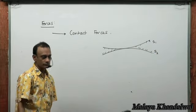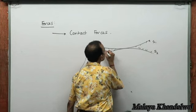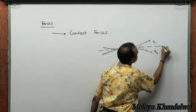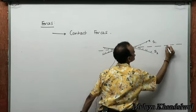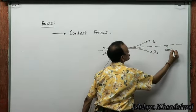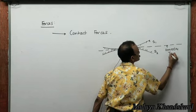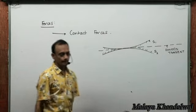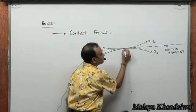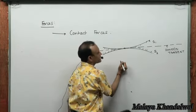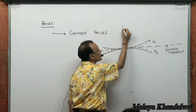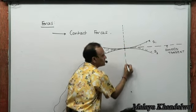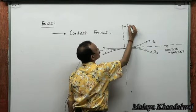At the region of contact, there is a common tangent to the two surfaces. If you draw a line perpendicular to this common tangent, that direction is called the common normal direction.